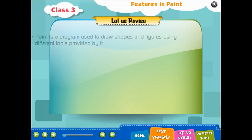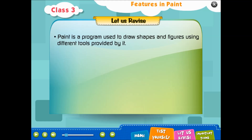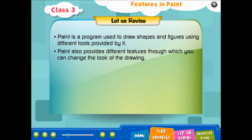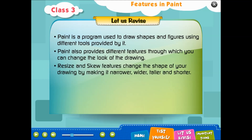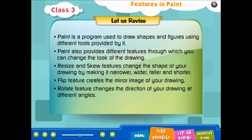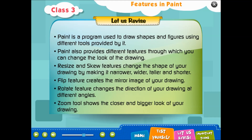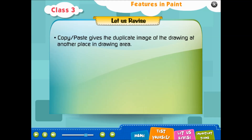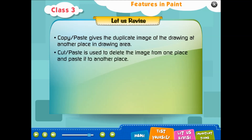Let us revise: Paint is a program used to draw shapes and figures using different tools. Paint also provides different features through which you can change the look of the drawing. Resize and skew features change the shape of your drawing by making it narrower, wider, taller, or shorter. Flip feature creates the mirror image of your drawing. Rotate feature changes the direction of your drawing at different angles. Zoom tool shows the closer and bigger look of your drawing. Copy and paste gives a duplicate image at another place in the drawing area. Cut and paste deletes the image from one place and pastes it to another.